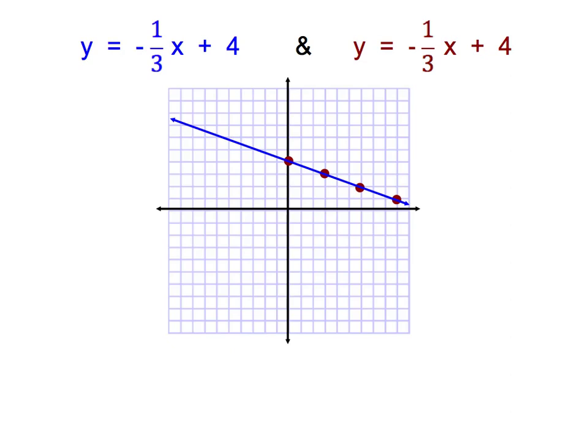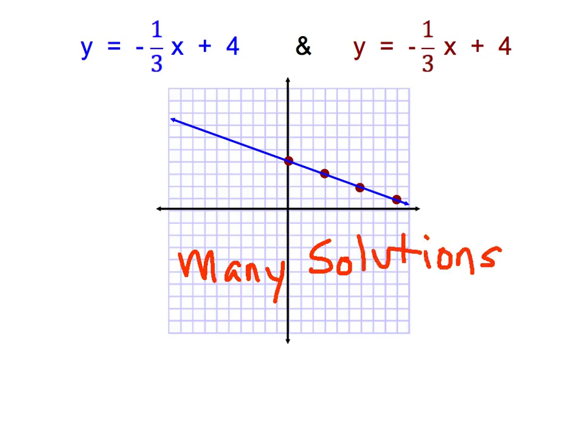When this happens and the line is exactly the same, we say that this system has many solutions — or infinitely many solutions. Both mean the same thing: we could list an endless number of solutions, because this line goes on forever and we could list endless ordered pairs that work in both equations.